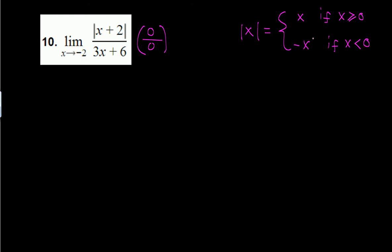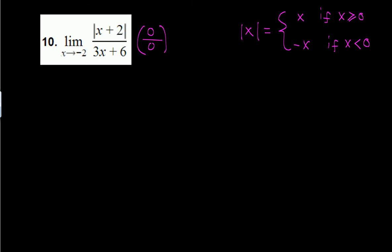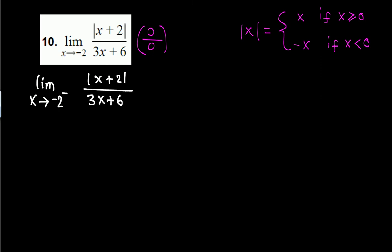We need to use this definition to get rid of the absolute value, giving us two cases: x bigger than or equal to 0, or less than 0. So we consider one-sided limits. Let's find the left-hand limit — the limit as x approaches negative 2 from the left side of the absolute value of x plus 2 over 3x plus 6.